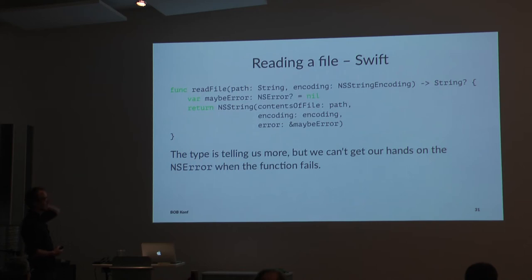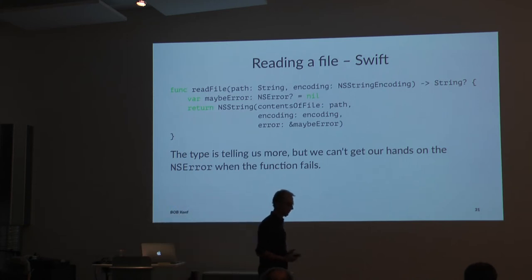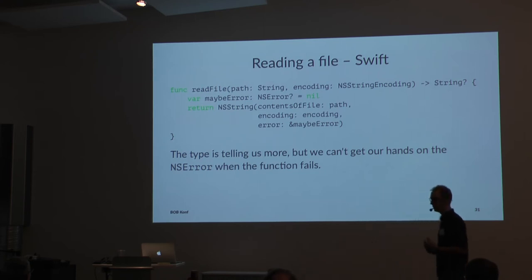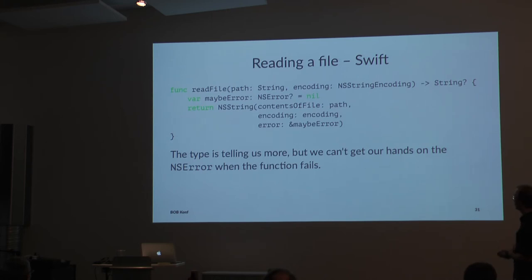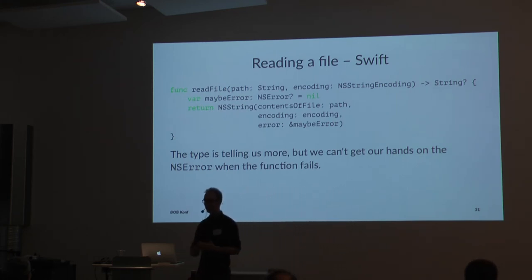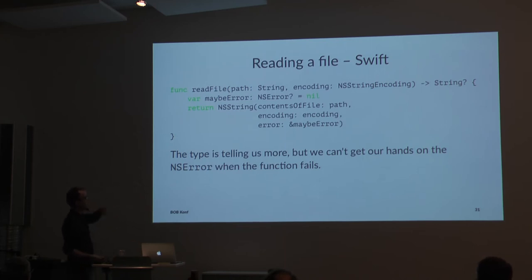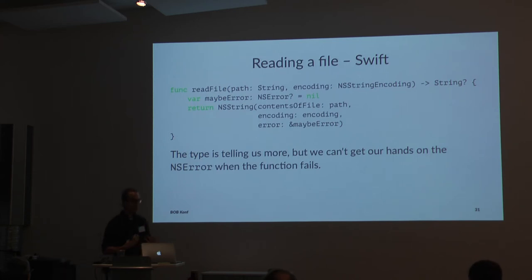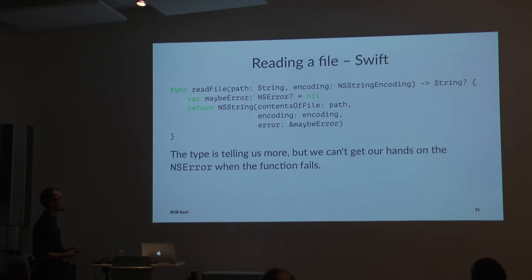We can write a small Swift wrapper that requires a string and a string encoding and returns a String? — a string which could be nil. What's very nice in Swift is that nil/null values are tracked in the types. When you call this function, you know something might go wrong: if it does, you get nil, and you must check before manipulating the underlying string. The drawback is if the function fails and returns nil, I don't have a way to get the NSError object — I've lost information about why it failed.